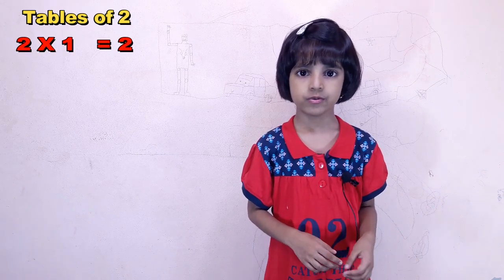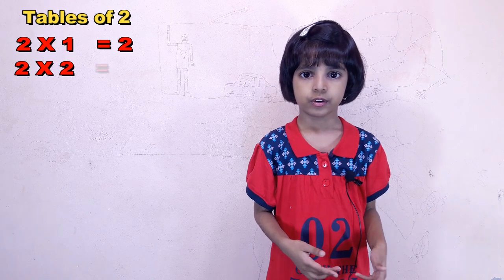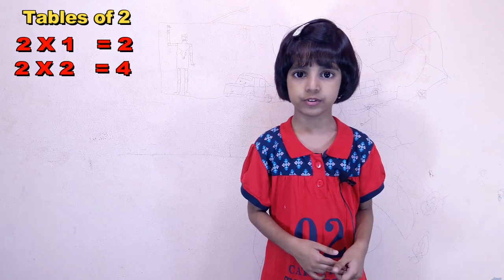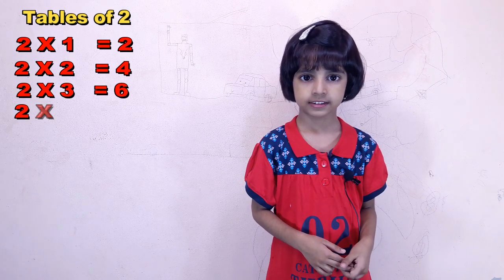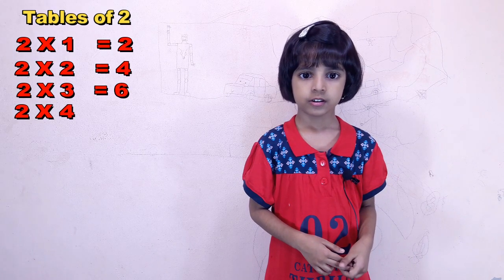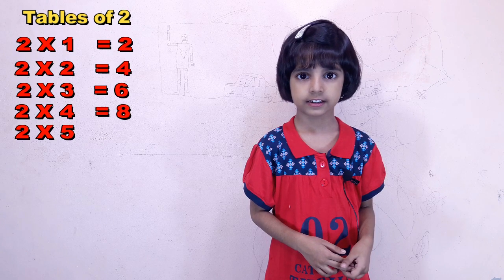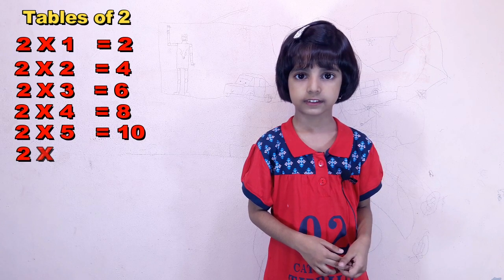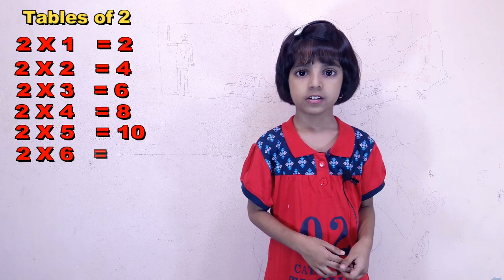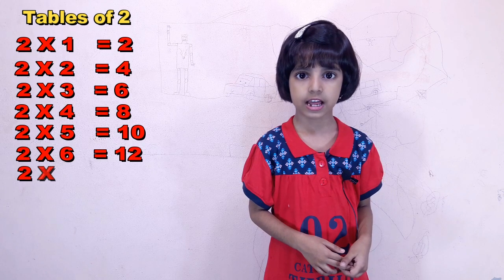Two ones are two. Two twos are four. Two threes are six. Two fours are eight. Two fives are ten. Two sixes are twelve.